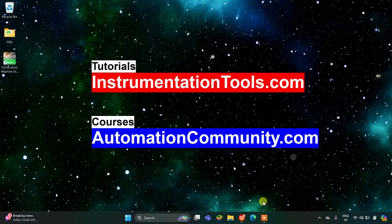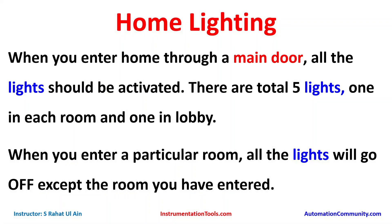Hello everyone, welcome to Automation Community. Today in this video we are going to discuss an example on home lighting. When you enter home through a main door, all the lights should be activated. There are total five lights — one in each room and one in the lobby. When you enter a particular room, all the lights will go off except the room you have entered.